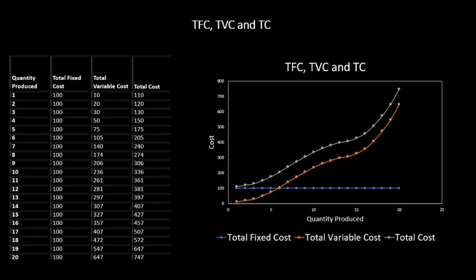Look at this table. The first column indicates the quantity produced, then we have the total fixed costs. Total fixed costs include expenses like rent, the lease amount for the facility, or the amount spent on furniture and equipment. Then we have the total variable costs, which vary according to the quantity produced — higher the quantity produced, higher would be the variable cost. Finally, total cost equals total fixed costs plus total variable costs. On the graph, the total fixed cost is a straight line because it is a constant value until we reach maximum capacity. Then we have total variable costs, and finally, total costs.